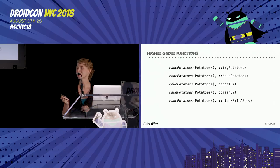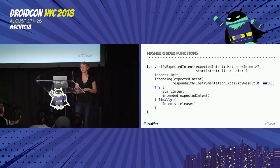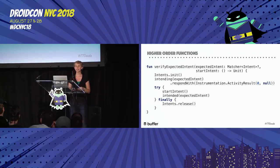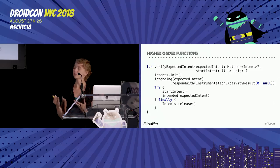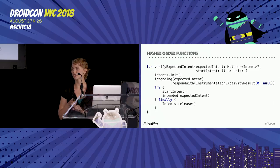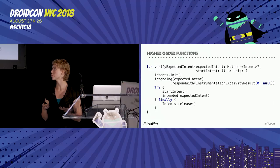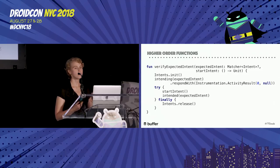Just like that, we have a function to make and eat any kind of potato without the repetition of including prep and eat work in every different cooking method. Here's an example from the Biscotti library: a function for an Espresso test that verifies that a specific activity was started. It initializes the intents, performs the action that should cause the activity to launch — passed in as a lambda — and then it verifies and releases.